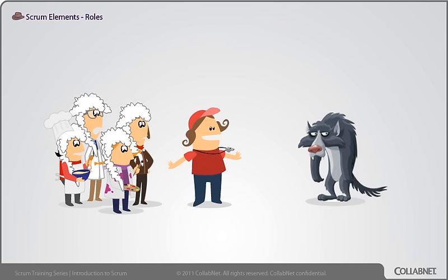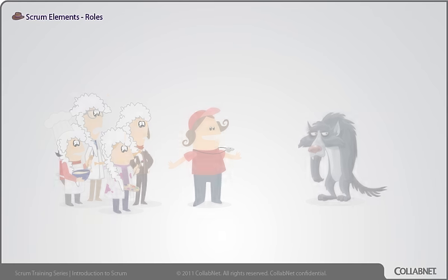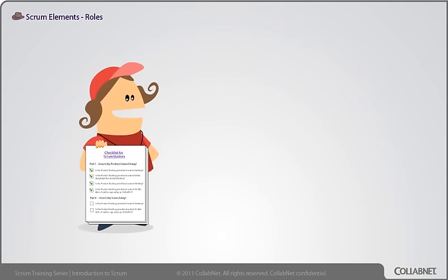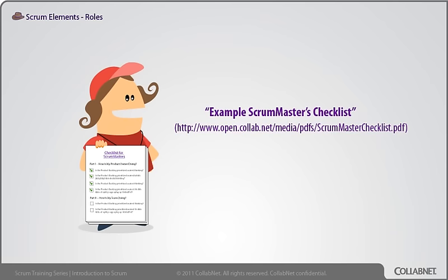How is that possible? It turns out power isn't even the most powerful type of influence. For further information on the elusive Scrum Master role, see the example Scrum Master checklist — an example list of things the Scrum Master will be concerned with fixing.